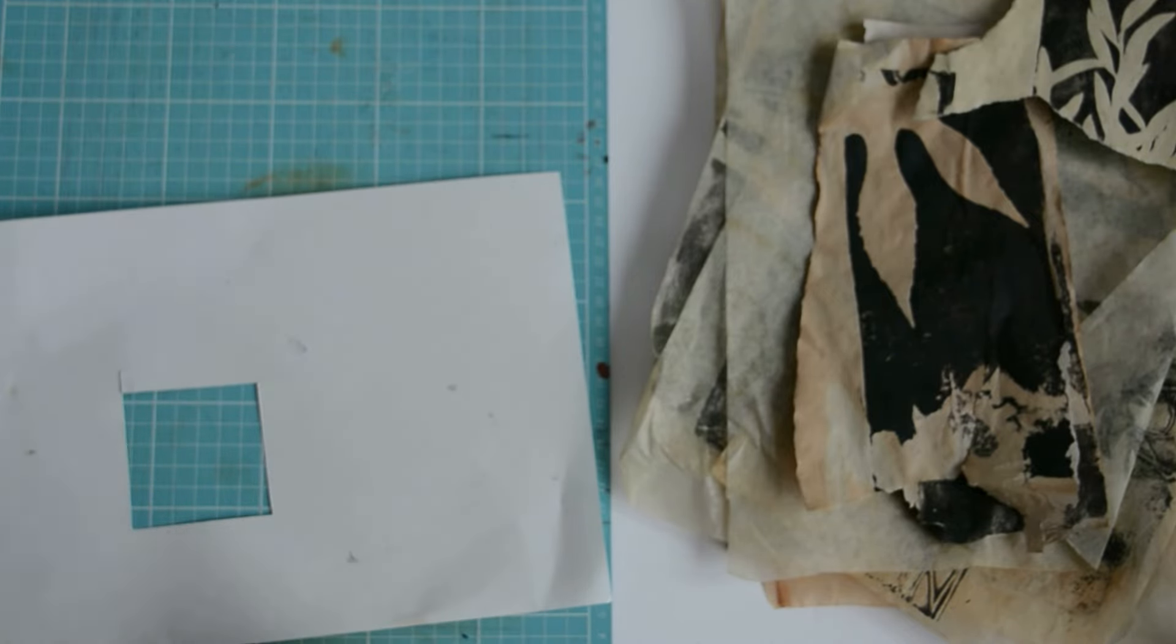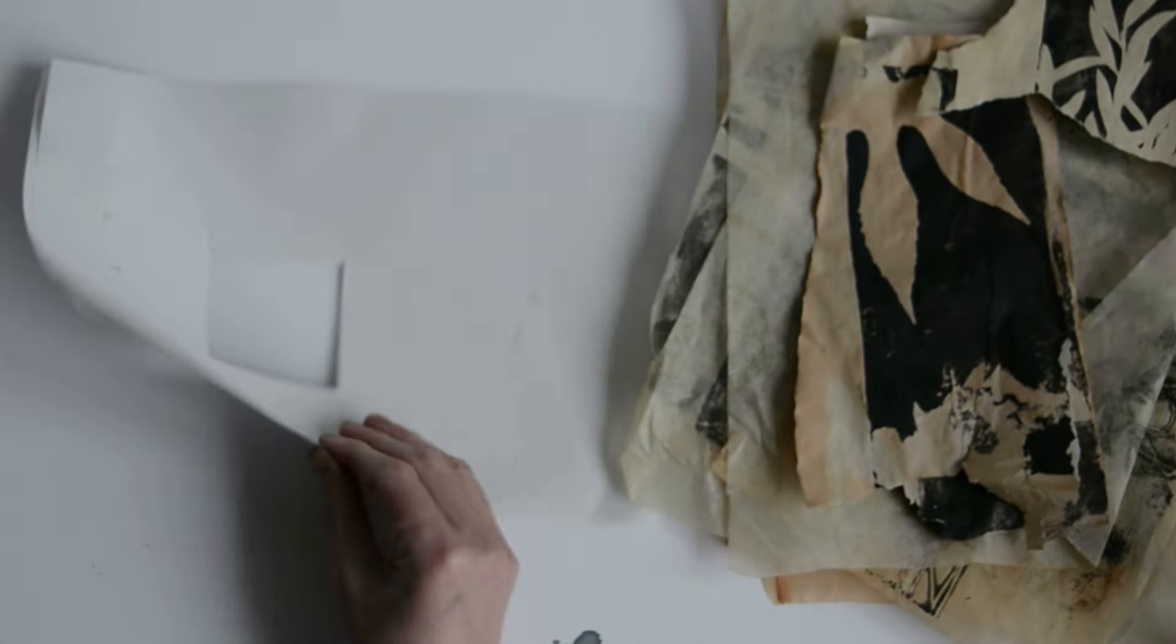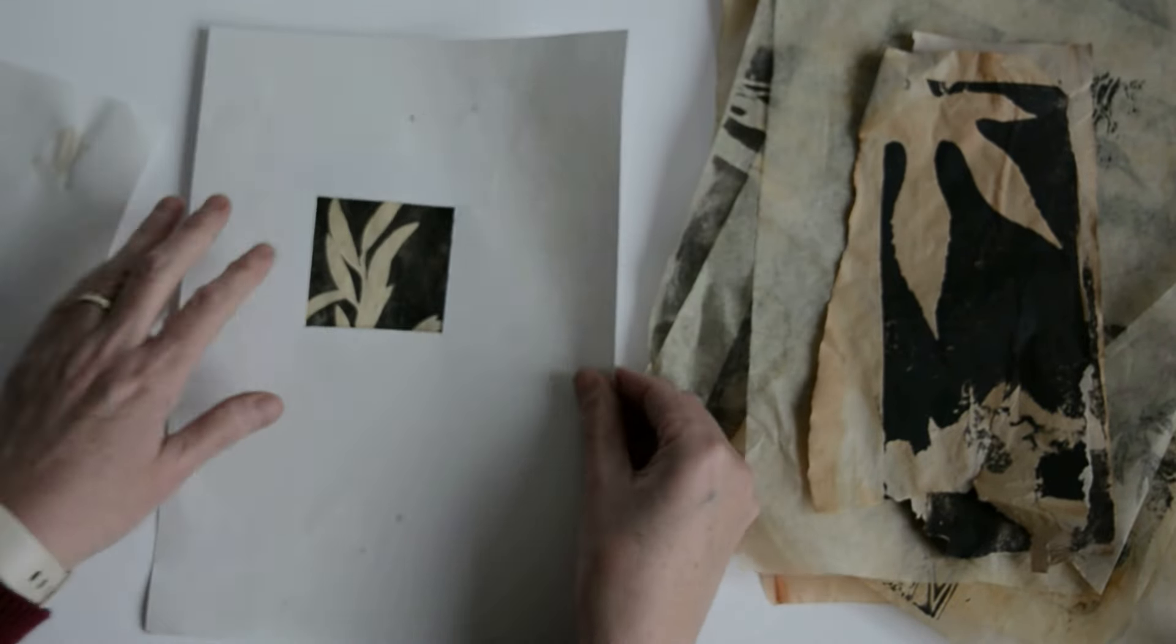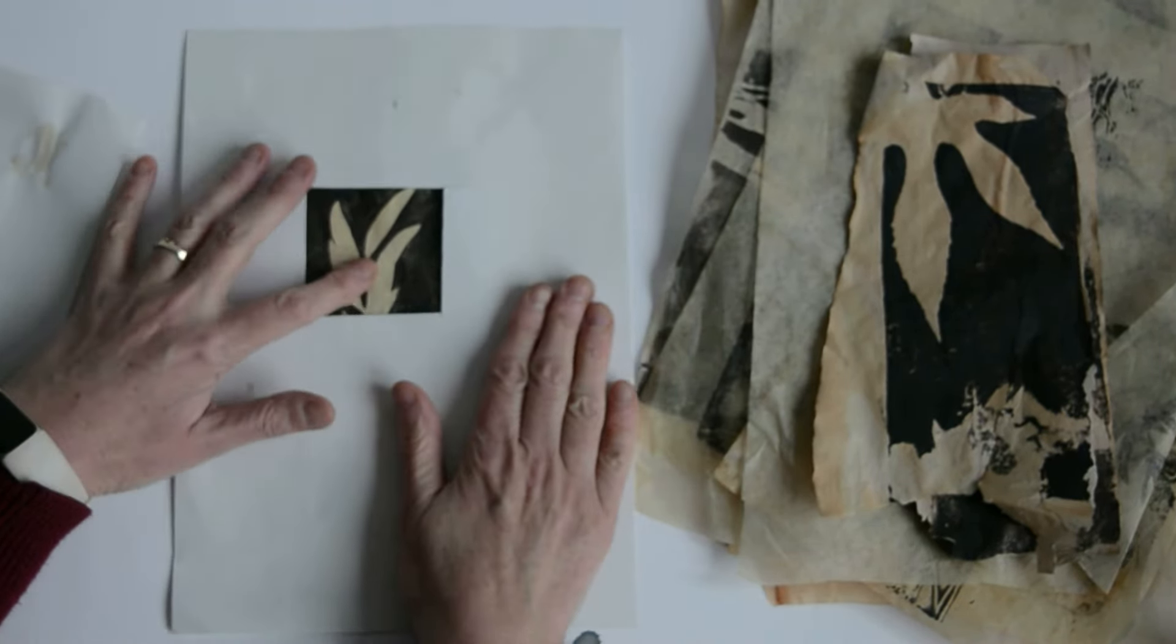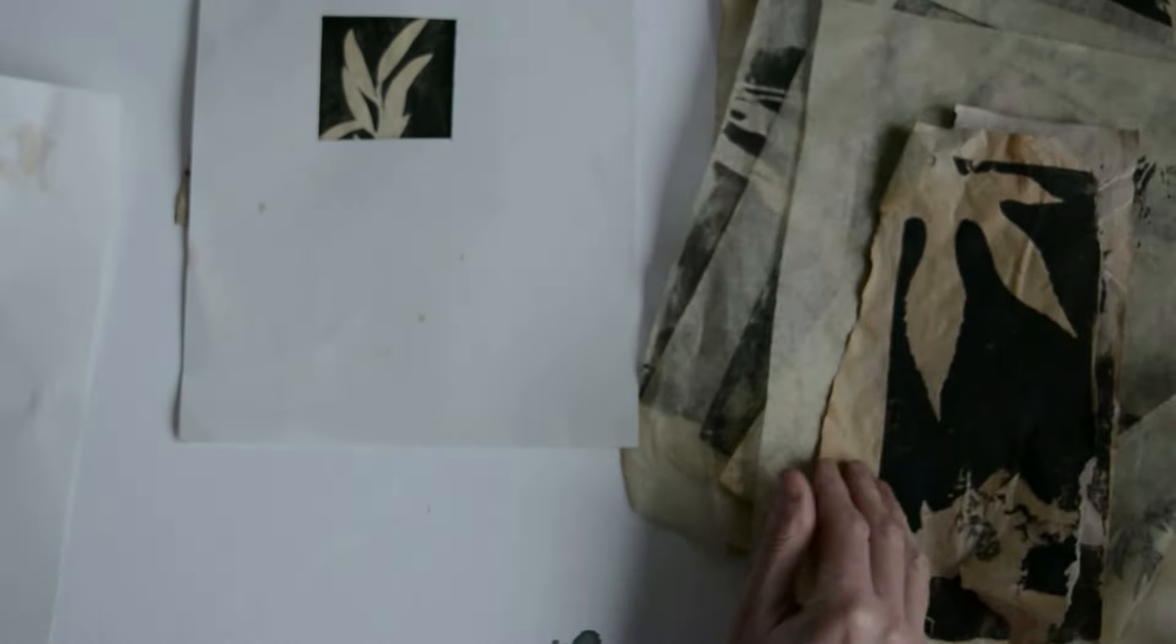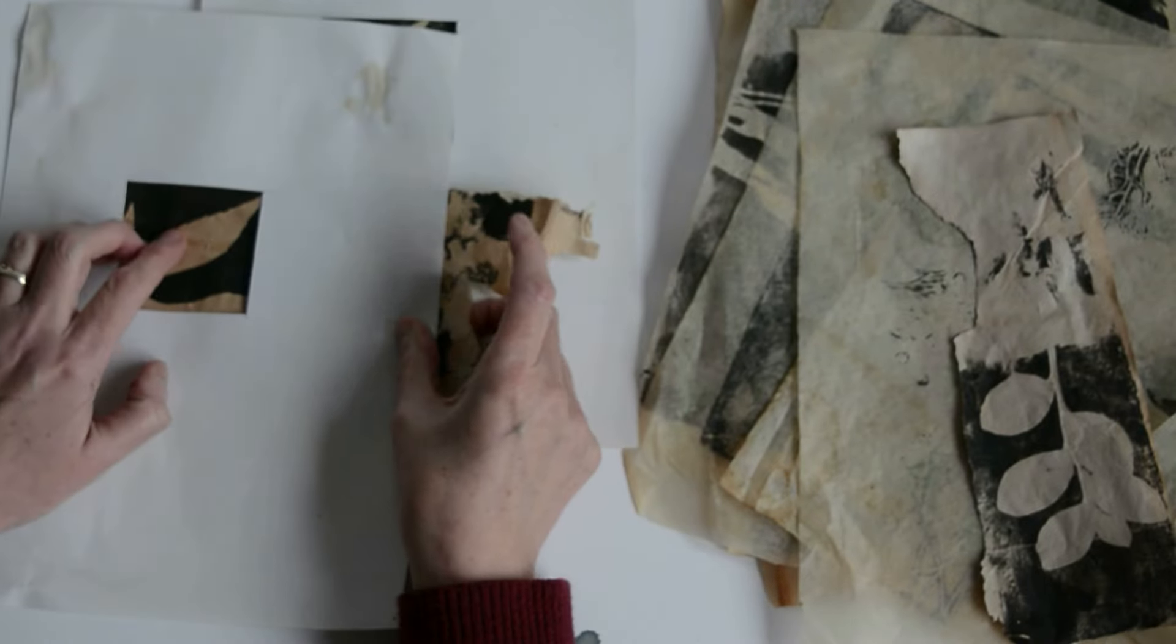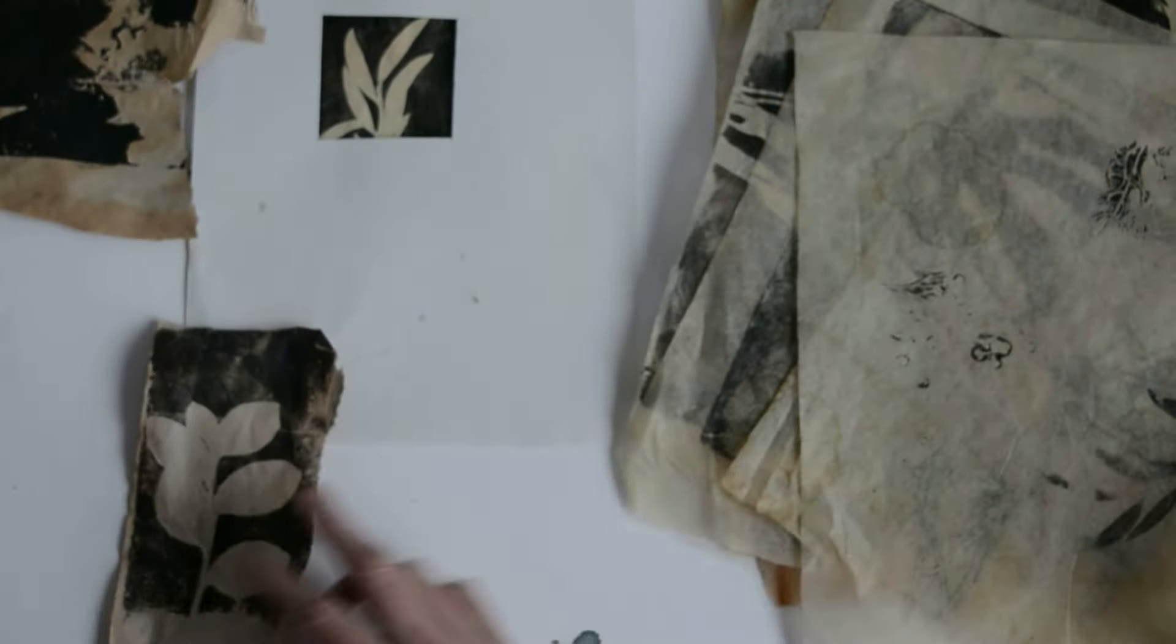So that's a viewfinder cut out. Now get your prints and just play around with your composition, see where you like it. As you can see it's really helpful. Once you've found your composition from each print.